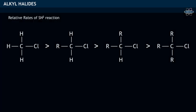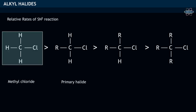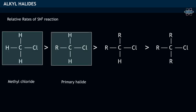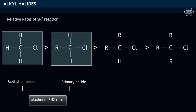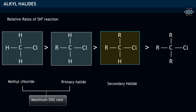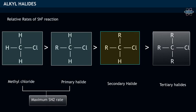Among various alkyl halides, methyl chloride and primary alkyl halides have the maximum SN2 reaction rate, followed by secondary alkyl halides, while tertiary alkyl halides show the minimum SN2 reaction rate.